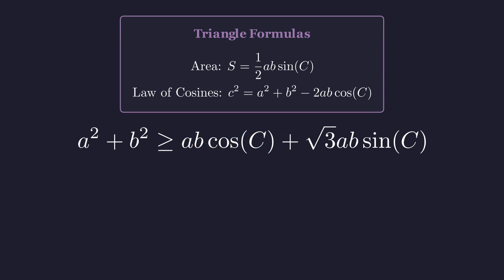Perfect! This isolates A squared plus B squared on the left, giving us a clean separation. Now here's a nice observation: we can factor out A times B from the right-hand side. This reveals a much clearer structure, with that elegant combination of sine and cosine just waiting to be simplified further.